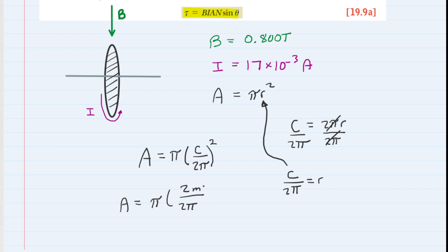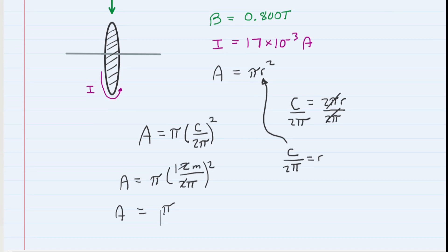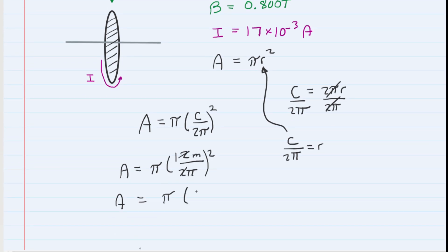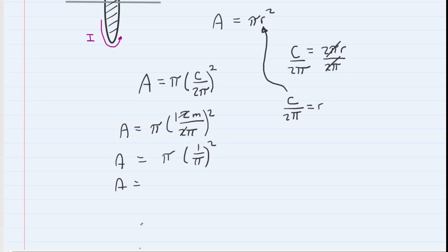We plug in 2 meters for the circumference. It's convenient that it's 2 meters because these 2's cancel out, leaving 1 over pi. We want to simplify this. The area equals pi multiplied by 1 over pi, and that quantity is squared. When you square 1 over pi, you get 1 over pi squared.